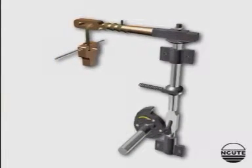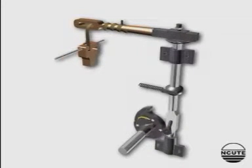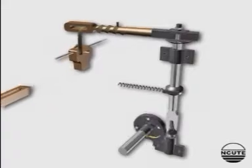A similar mechanism is fitted on the other side of the loom. So when the bottom shaft rotates by one turn, two picks are inserted.